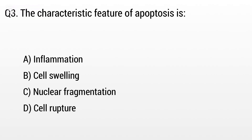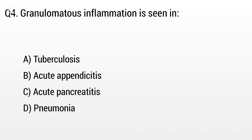Question 3. The characteristic feature of apoptosis is: Option A: Inflammation, B: Cell swelling, C: Nuclear fragmentation. But the right answer is Option C: Nuclear fragmentation.